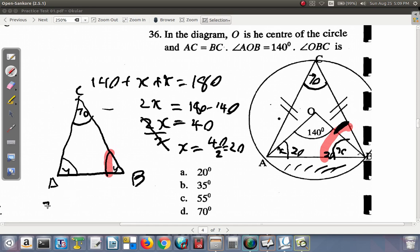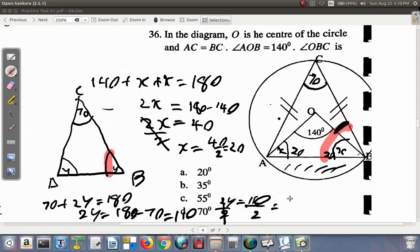So 70 plus Y plus Y, which is 70 plus 2Y, equals 180. So 2Y equals 180 minus 70, which is 110. The angle Y would be 55 degrees. So all of this is 55 degrees. If you take off 20 from it, 55 minus 20 is 35. Question 36, the answer is B.